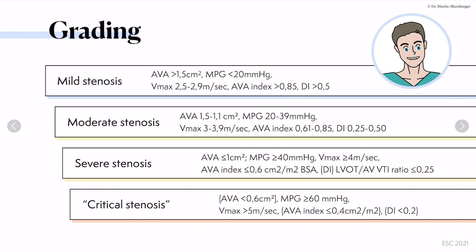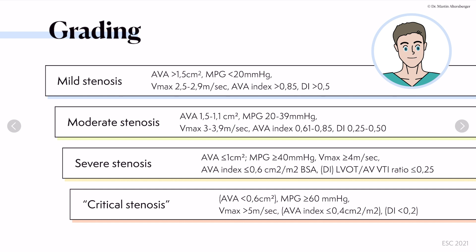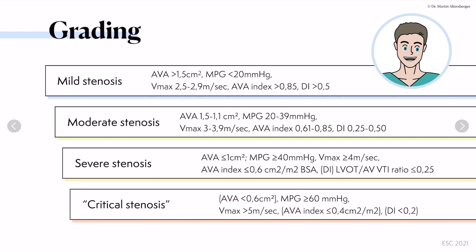For a moderate stenosis, the aortic valve area measured with the VTI is 1.1 to 1.5 square centimeters. The mean pressure gradient is in the range of 20 to 39 millimeters of mercury. The maximum velocity is 3 to 3.9 meters per second.